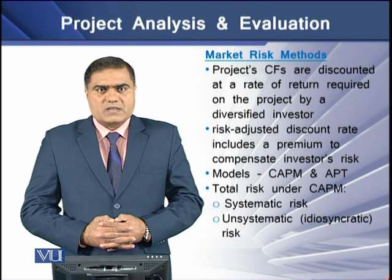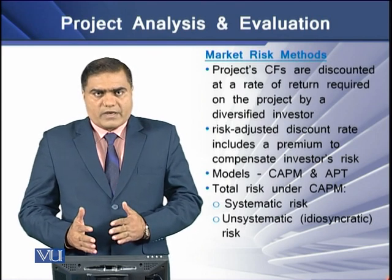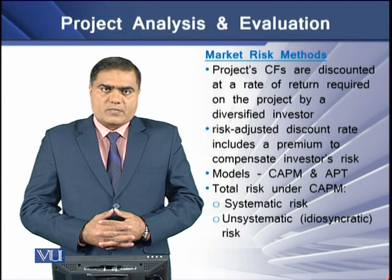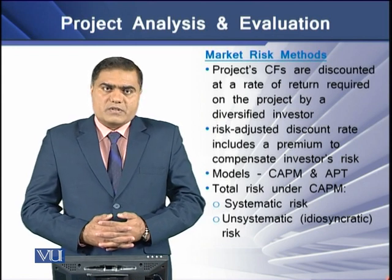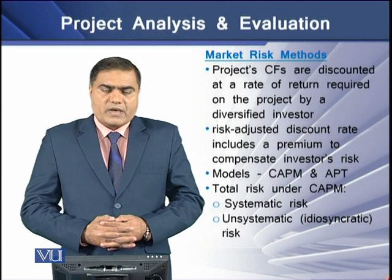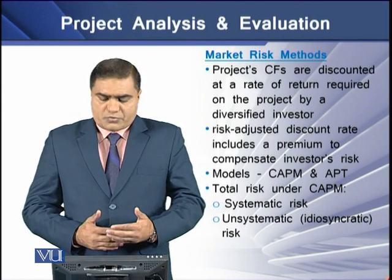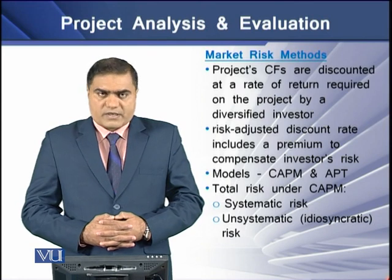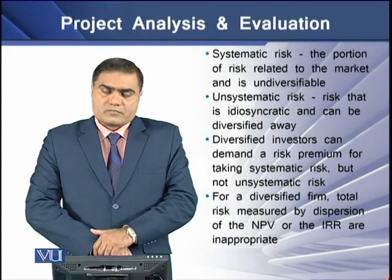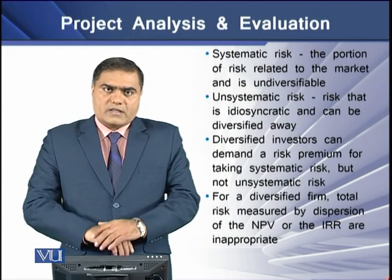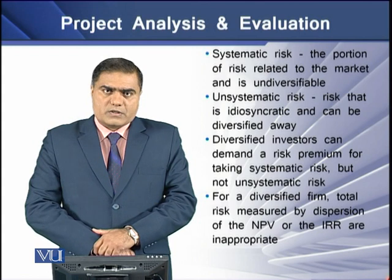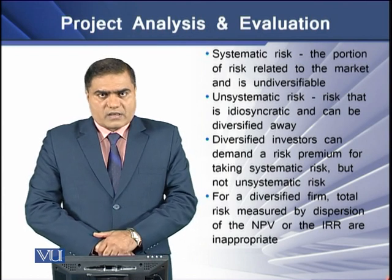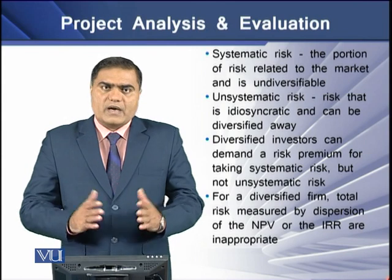To determine project riskiness using market-based methods, we have two commonly known methods: CAPM, which is known as the capital asset pricing model, and APT, which is known as arbitrage pricing theory. The total risk of a project can be classified into two components under CAPM theory — that is, systematic risk and unsystematic or idiosyncratic risk. Systematic risk is that portion of the total risk which is due to the system inherent in the market, and this risk cannot be diversified.